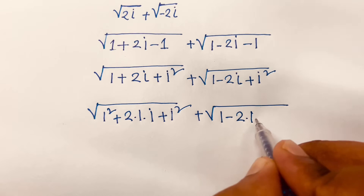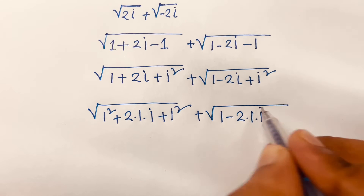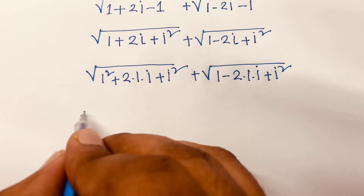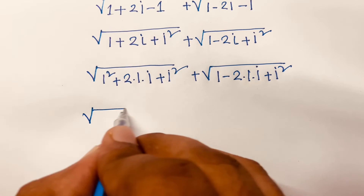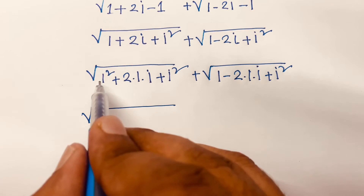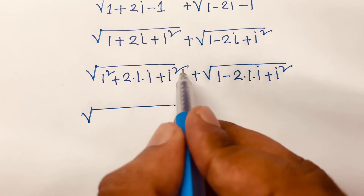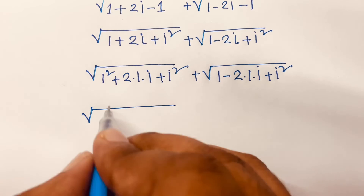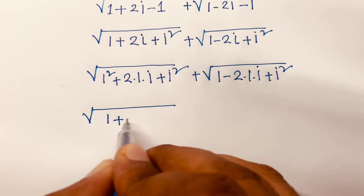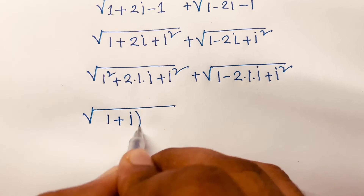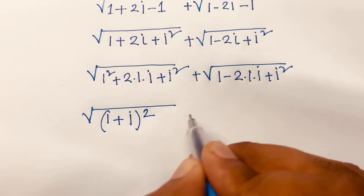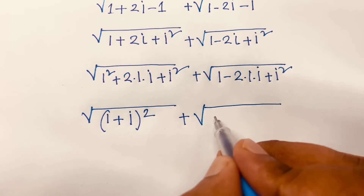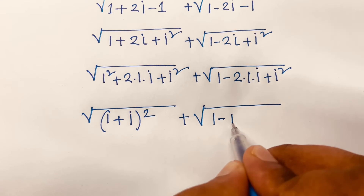Notice that these are perfect square trinomials. Using the identity a² + 2ab + b² = (a + b)², we can write (1 + i)² + √(1 - 2i + i²) = (1 - i)².